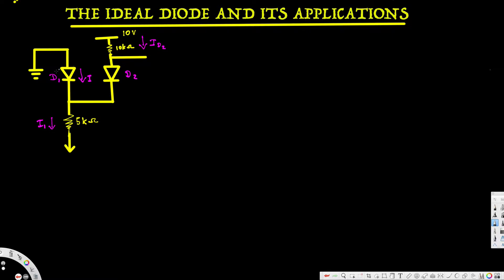In the open circuit method, what we do is we remove all the diodes and keep them as open. If we replace this one with an open circuit, the circuit is going to look like this — this node is going to be open and here also it's going to be open.